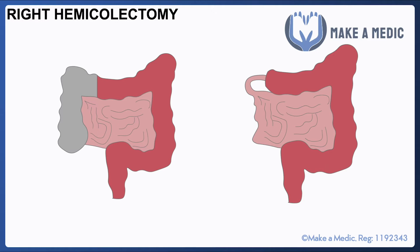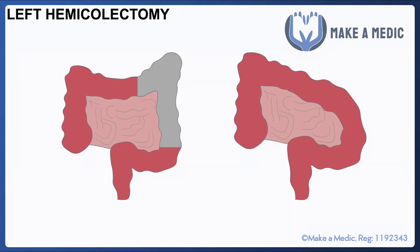A right hemicolectomy is a procedure that's usually done for malignancies affecting the right side of the colon. It involves removing everything from the ileocecal valve all the way up to about a third of the way along the transverse colon. Patients may be able to have a primary anastomosis, in which case the ileum is joined onto the remaining bit of colon, or sometimes they may be left with a stoma instead.